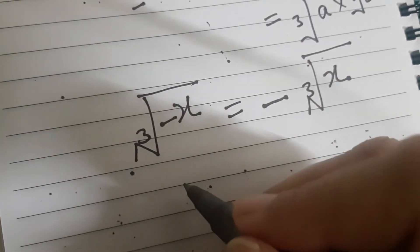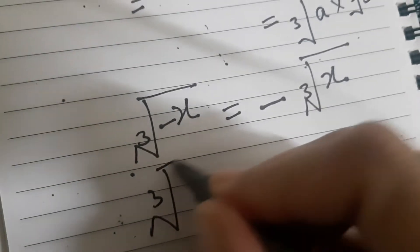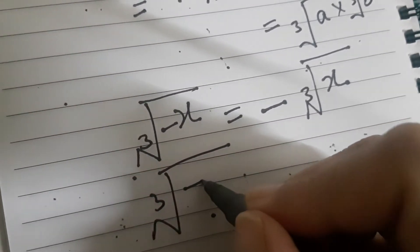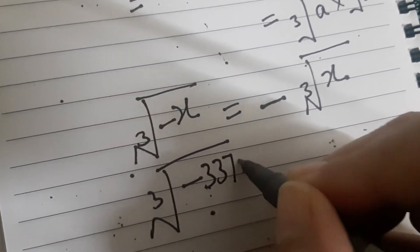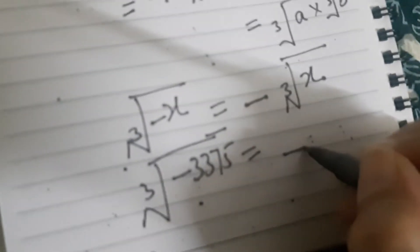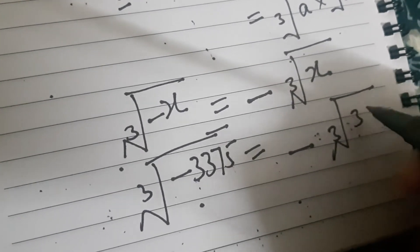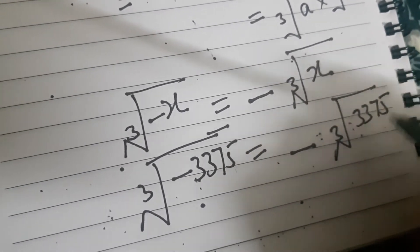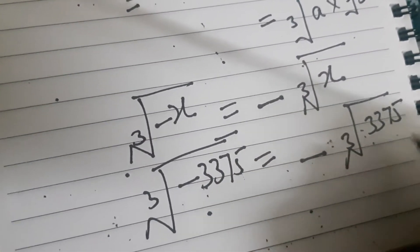For example, you are asked to find out cube root of minus 3375. So this will be equal to minus cube root of 3,375. So you can find it by prime factorization method.